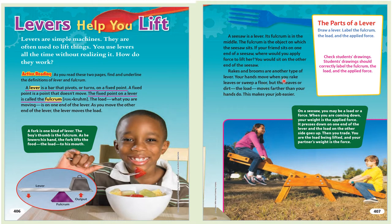The parts of a lever: draw a lever and label the fulcrum, the load, and the applied force. On a seesaw, you may be a load or a force. When you are coming down, your weight is the applied force. It presses down on one end of the lever, and the load on the other side goes up. Then you trade. You are the load being lifted, and your partner's weight is the force.